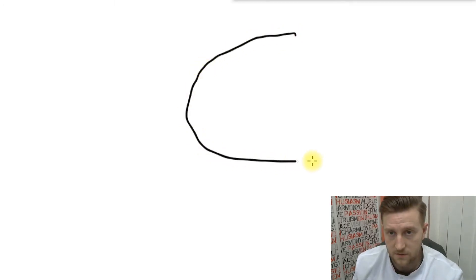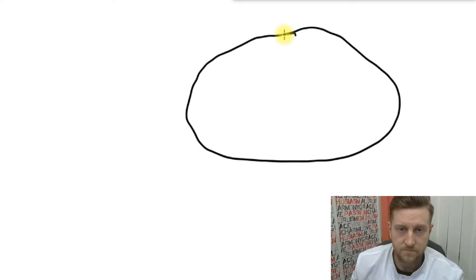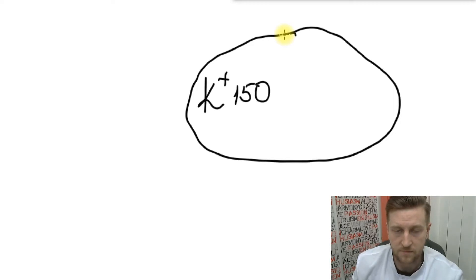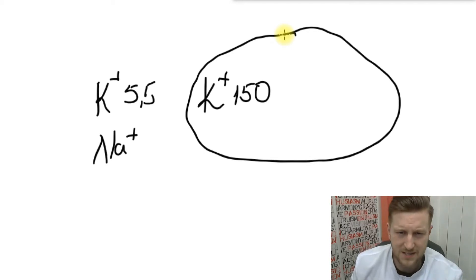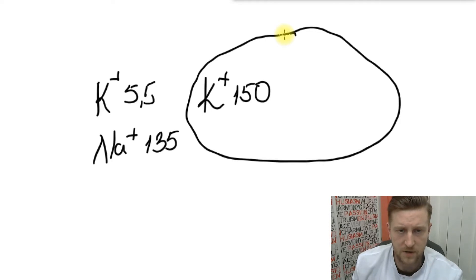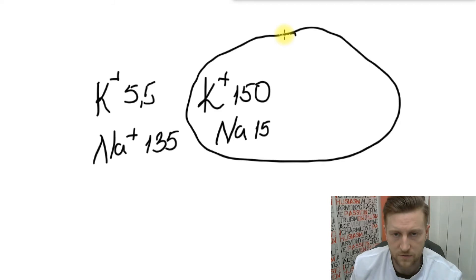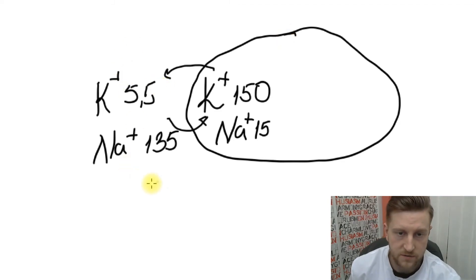The first thing we'll discuss about resting potential is the distribution of ions. Let's draw a cell. Inside the cell we have a lot of potassium — around 150 millimole per liter. Outside the cell, much less — around 5 millimole per liter. Outside the cell we have a lot of sodium, usually around 135–145 millimole per liter. Inside, much less — around 15 millimole per liter.